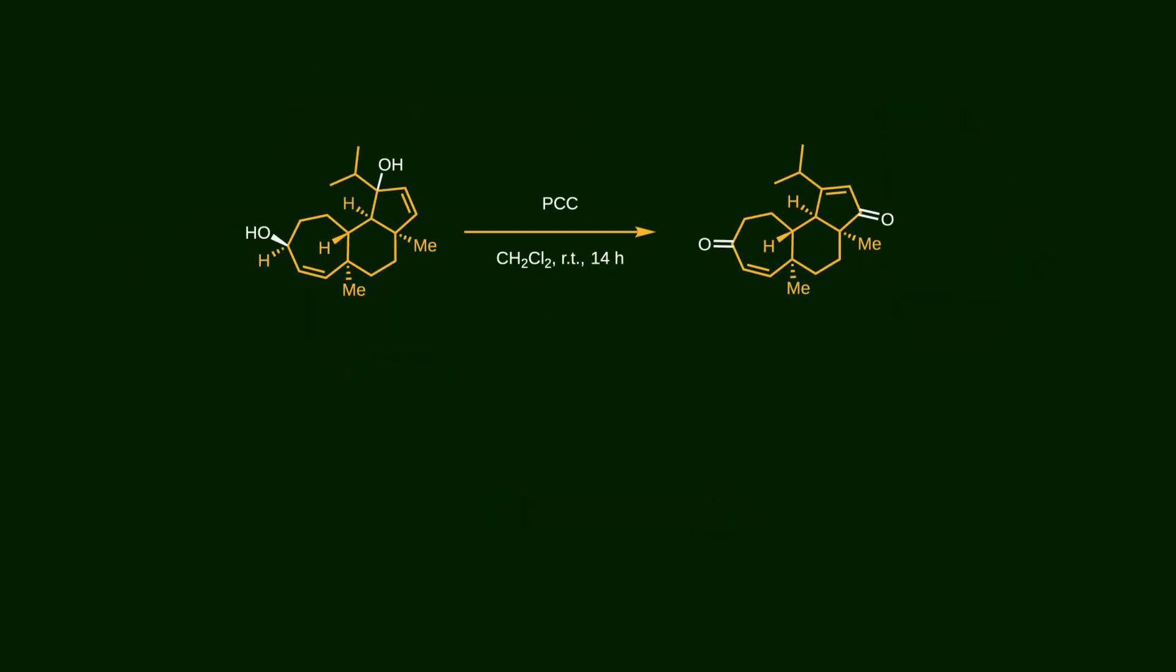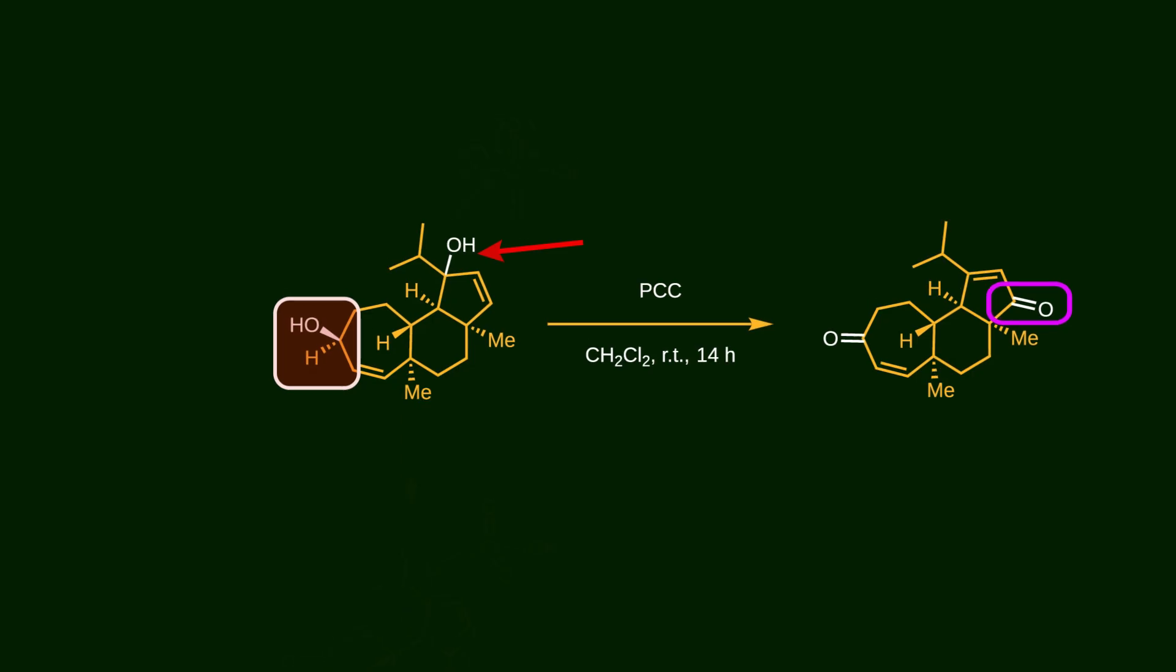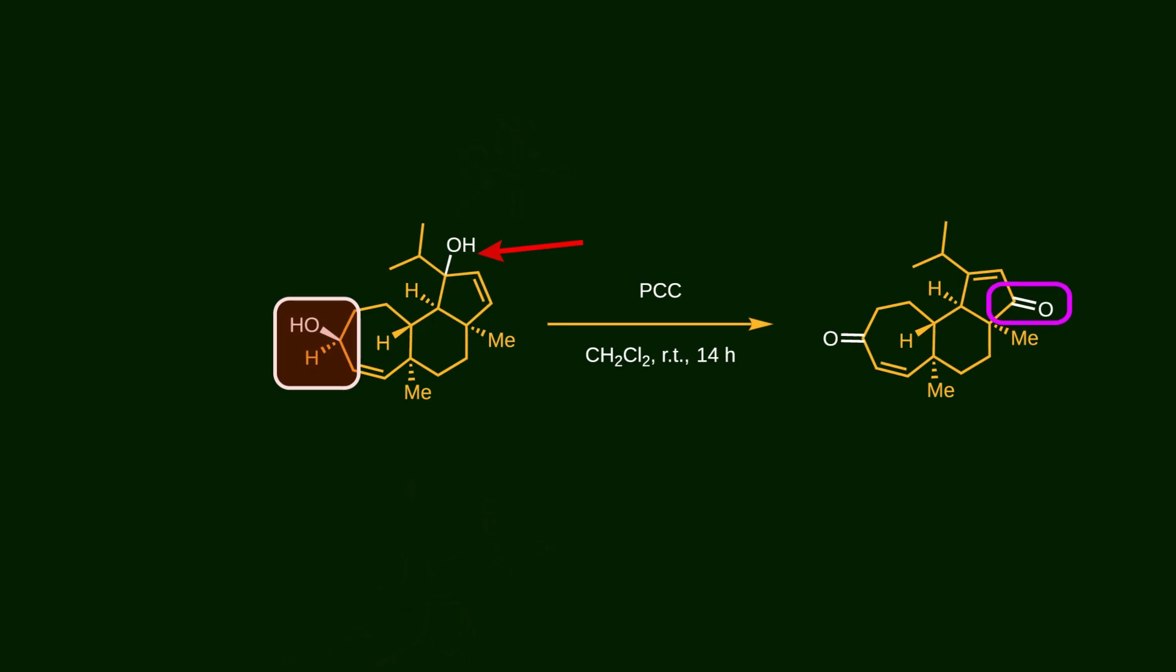In the next step, treatment of this intermediate with PCC leads to the oxidation of both vinylic alcohols. Interestingly, the position of this alcohol is changed during this process. Unlike the vinylic hydroxyl group on the seven-membered ring, this alcohol lacks an alpha hydrogen, and that's the reason for the migration.